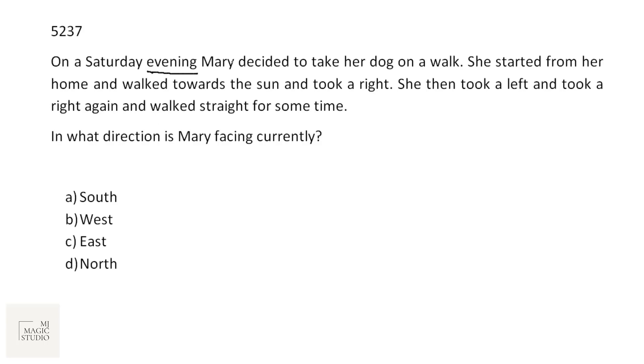On a Saturday evening, Mary decided to take her dog on a walk. She started from her home and walked towards the sun. It's evening, so sun should be towards west direction. She started walking towards sun, that means towards west. This is the starting point. She took a right, right means towards north now. She then took a left, left again towards west. And took a right again, that means towards north. And walked straight for some time. In what direction is Mary facing currently? Mary is facing north direction. Option D.